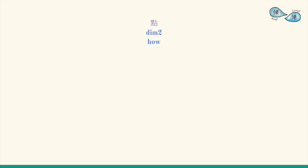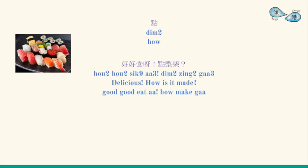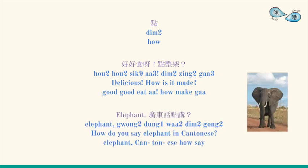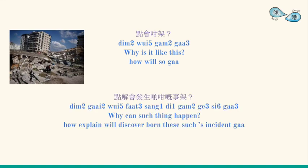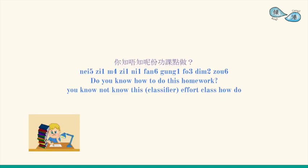The last interrogative for the lesson is 點, which means 'how' or 'why'. For example: 好好食呀，點製家? (This is so delicious, how did you make it?) 廣東話點製家? (How do you say 'elephant' in Cantonese?) 點會這樣呀? (How did something like this happen?) 點 can also be incorporated into a yes-no question: 你知唔知份功課點做? (Do you know how to do the homework?)